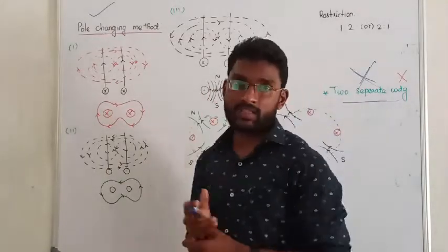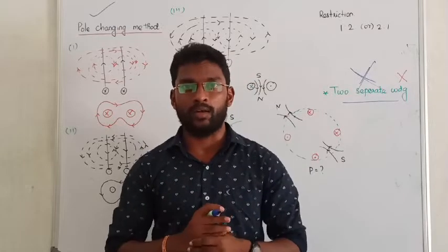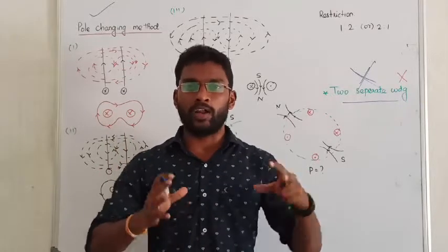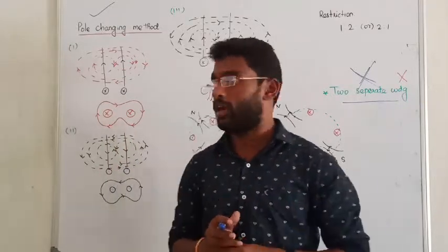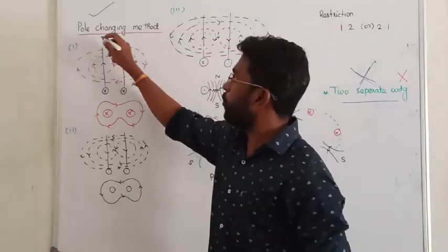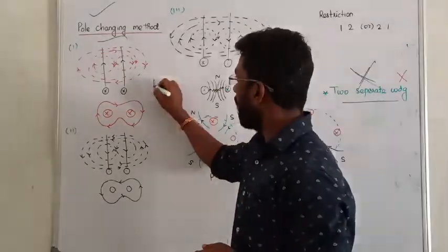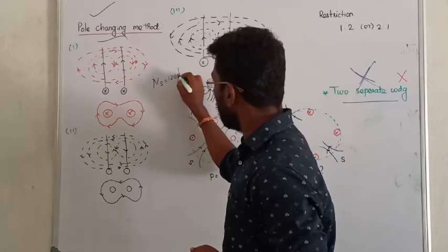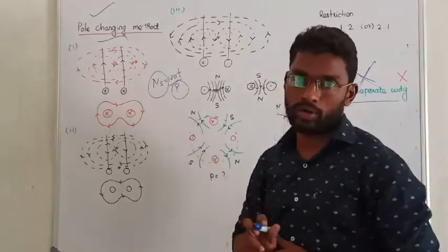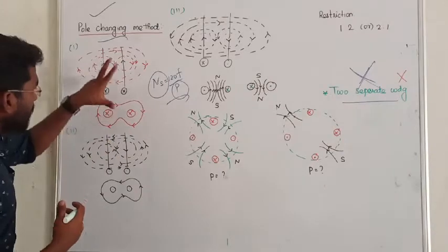What about the squirrel cage? In the squirrel cage, the rotor is just copper bars short-circuited, so you can make any changes to the stator. That is the beauty of the squirrel cage. So let us discuss about the consequent pole changing method. We all know Ns = 120F / P. By changing the number of poles, the speed can be controlled.